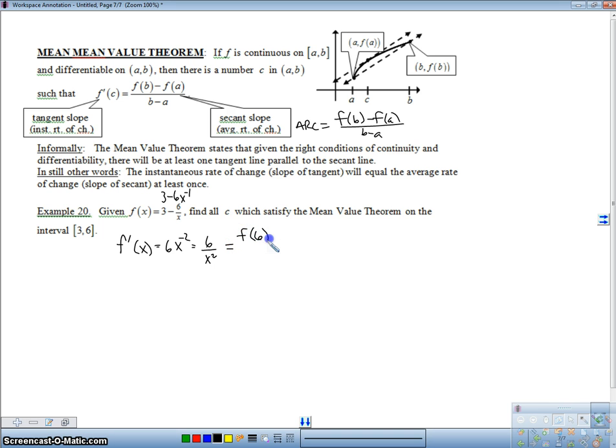So, we're doing F of 6 minus F of 3 over 6 minus 3. See, I'm setting it equal, because the mean value theorem says that there's got to be some place here where that's equal.